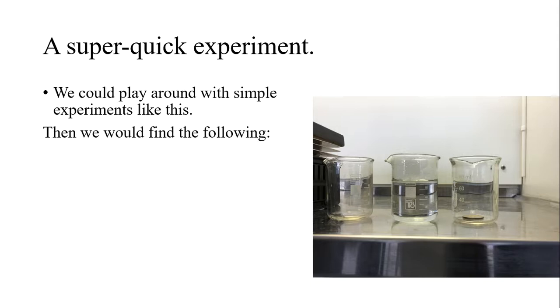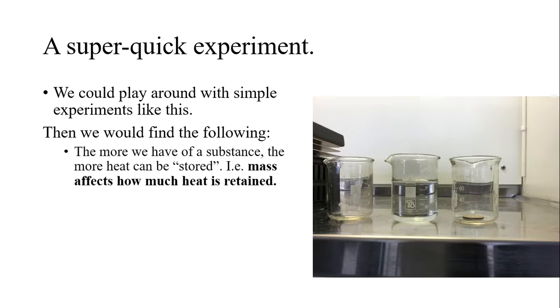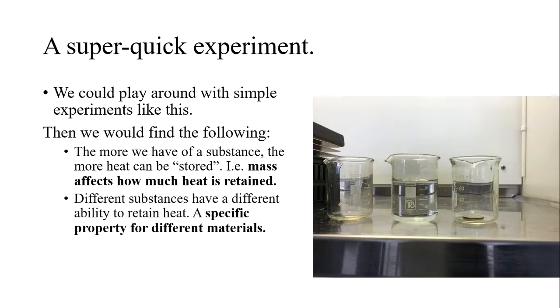So apparently, the ability to store heat then differs between water and metal, in this case this coin. We could do many different types of experiments like this. We could, for example, just compare a few different beakers of water with different masses. To see how the mass influences the time it takes for all of the energy to be lost. And then we would find out that, yes, the more we have of a substance, the longer it will take for that to cool down. So, the more mass we have, the more heat we'll retain. And if we check different substances, we will have different abilities. So, even if we have the same mass, depending on what we look at, we will have different abilities to retain heat. Apparently, this concept of retaining heat is a specific property for different materials.